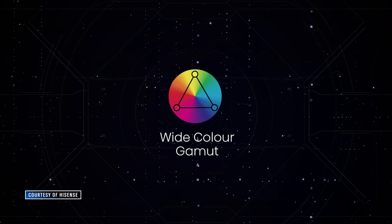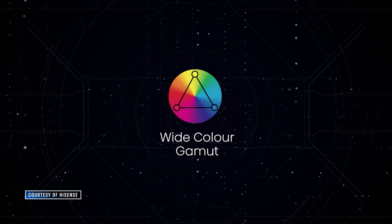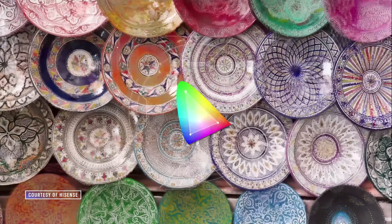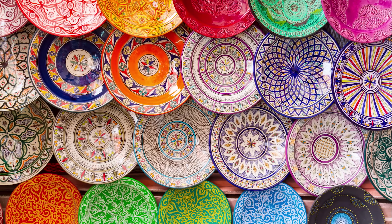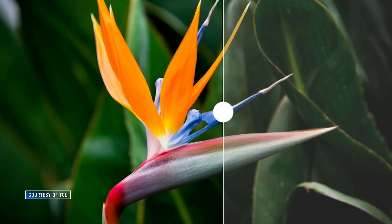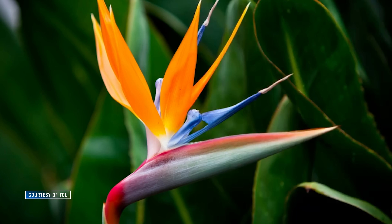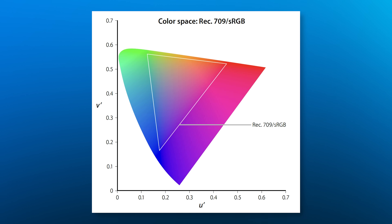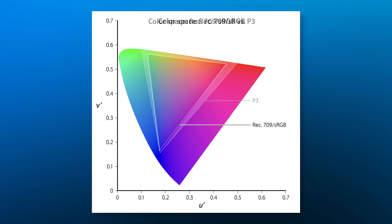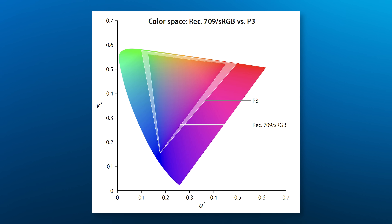Jay's question: do filmmakers have to purposely plan for and shoot in wide color gamut, or do those extra colors just appear when watching HDR? Are we often watching HDR video that does not take advantage of WCG? Here's the deal: we often see HDR and WCG mentioned in the same breath, but HDR and wide color gamut are not intrinsically linked. Technically, you can have HDR without WCG and WCG without HDR.